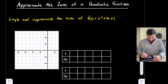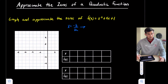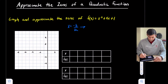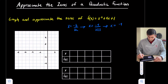We're going to start off by finding the axis of symmetry. We do that by taking the opposite of b and dividing by 2a. So x equals the opposite of 4, which is negative 4, divided by 2 times 1, giving us x equals negative 2.